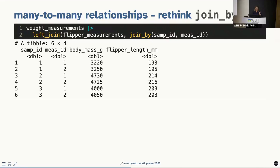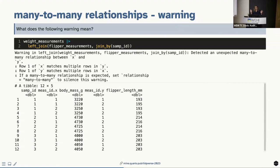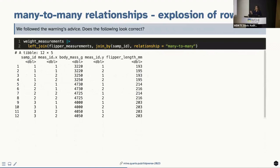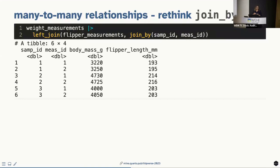The takeaway: many-to-many relationships can be computationally costly, and the warnings help you stop and think. But the warnings alone aren't enough to get you to the right answer — the human needs to understand the data well enough to know that joining by two variables makes more sense than one.